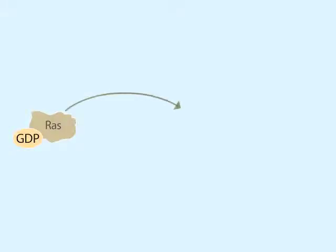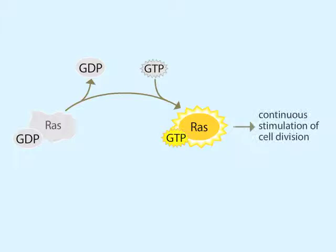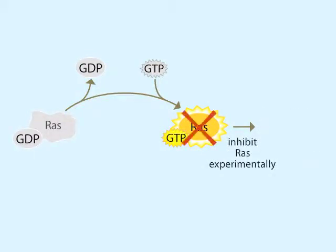Some human cancers contain an abnormal form of RAS. Investigations of these cancers showed that if the abnormal form of RAS is stimulated to pick up GTP, it becomes permanently bound to GTP, because it cannot hydrolyze GTP into GDP and inorganic phosphate. Therefore, RAS remains permanently activated and causes continuous cell division. If the abnormal form of RAS is inhibited in some way, the cells stop dividing. This discovery has led to a major effort to develop specific RAS inhibitors for cancer treatment.